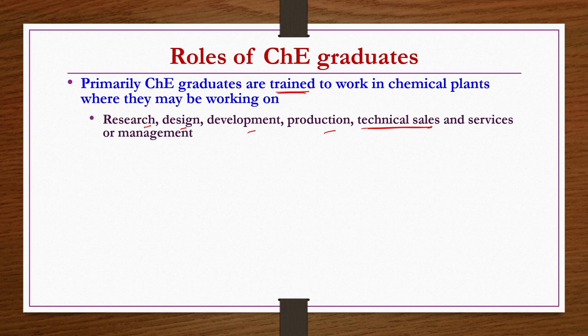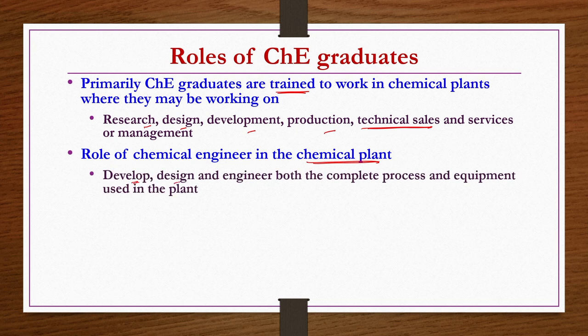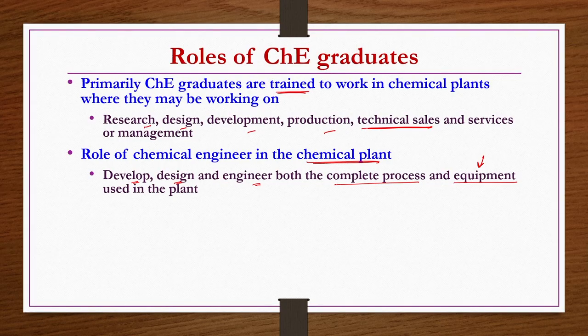If given tasks to look at the chemical plant part specifically, the basic things expected from an undergraduate chemical engineering student are to develop, design, and engineer not only the complete process but also individual equipment used in the plant. You should have complete knowledge about the design, operating process, and limitations, merits, and demerits of each equipment, as well as design, installation, and commissioning of the complete process.